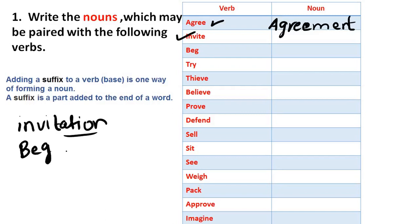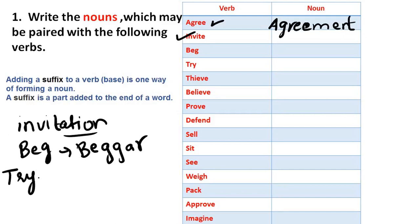Next, we have 'beg.' So, when we convert it to a noun, it will be 'beggar.' Then, we have 'trial.' 'Try' is the verb. We will convert this verb to a noun — we will add suffixes to the verb to get 'trial.'